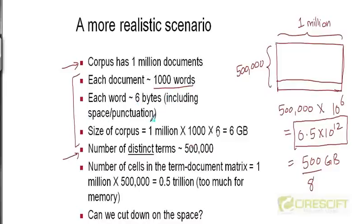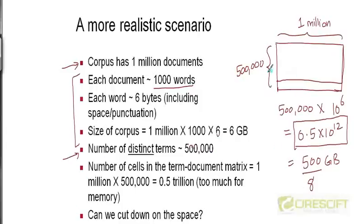The 6 bytes include not just the characters of the word, but also the accompanying spaces and punctuation marks. So if each document has 1000 words at 6 bytes per word, the size of a typical document is 6000 bytes. With a million documents, the total corpus size is 6 times 10 to the power 9 bytes, or 6 gigabytes. Going back to the term-document incidence matrix, it's impractical to build one even for a corpus of this size.